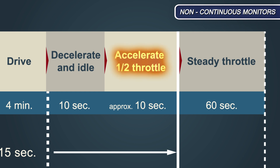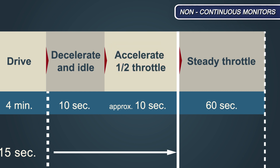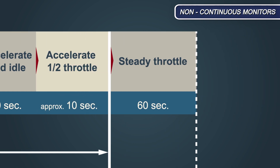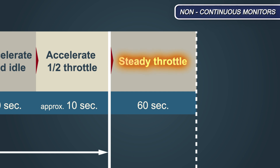Using half throttle, accelerate to 90 kilometres per hour or 55 miles per hour. This should take approximately 10 seconds. A steady throttle should be used to maintain a speed of 65 to 105 kilometres per hour or 40 to 60 miles per hour for 60 seconds.